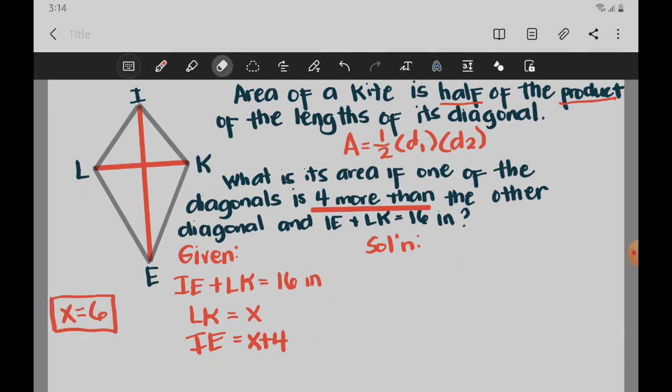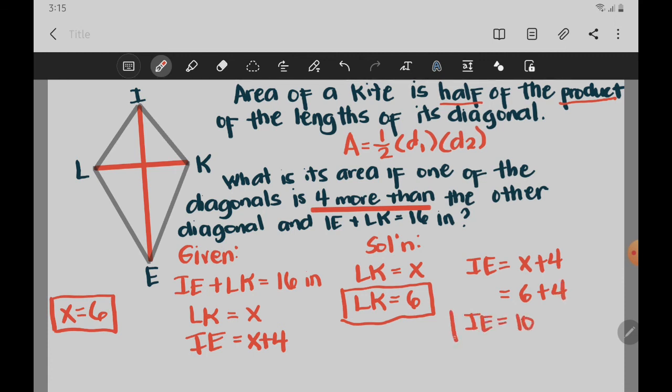So since our value of X is 6, we can substitute it in LK and IE to get the measure of the two diagonals. Since LK is only X, obviously LK is 6. We just replace X with 6. And then same goes with IE. We have X plus 4. We just replace X with 6. So we're going to have 6 plus 4. So our IE is 10. So the measure of our two diagonals is 6 and 10.